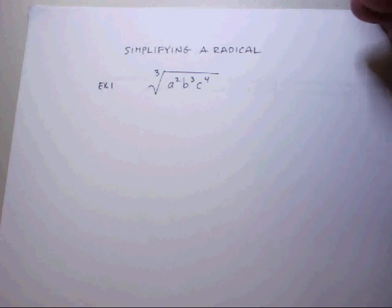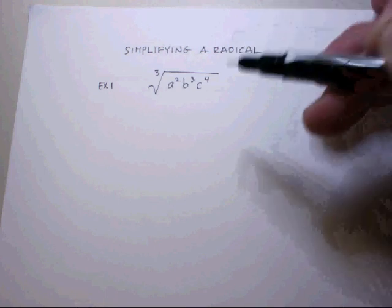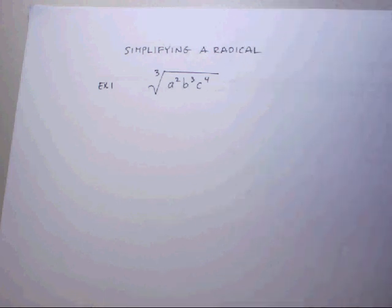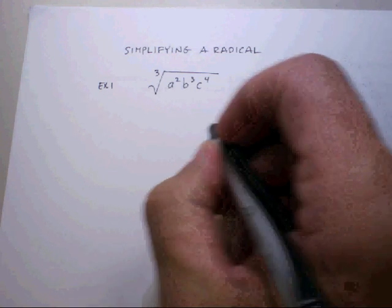So how do you change, for example, exponents to radical notation and radical notation back to exponential notation? There's a simple identity that you should learn. It looks like this.